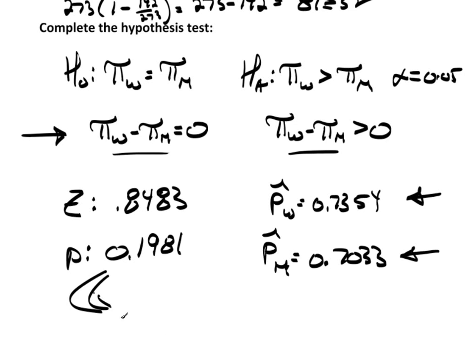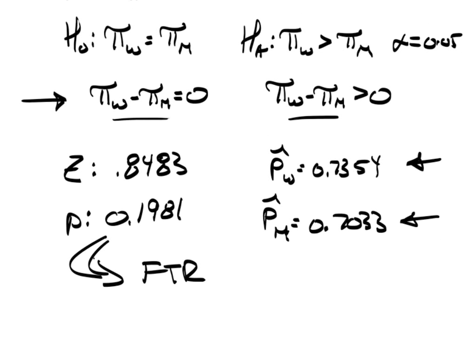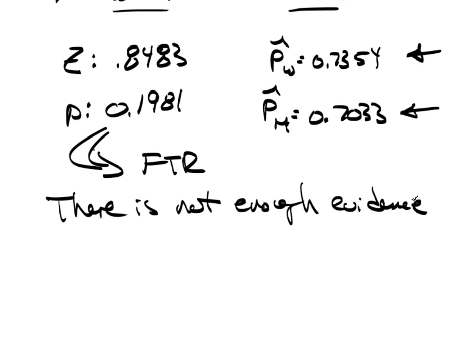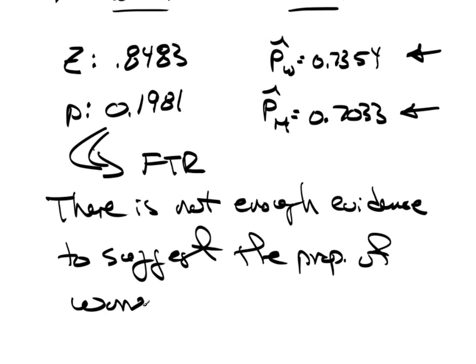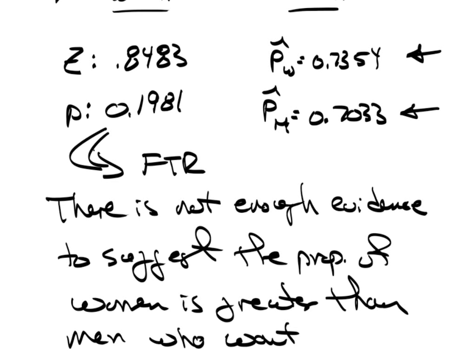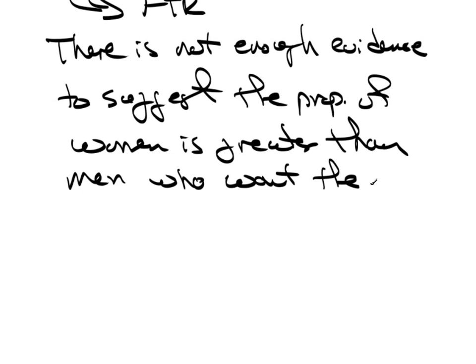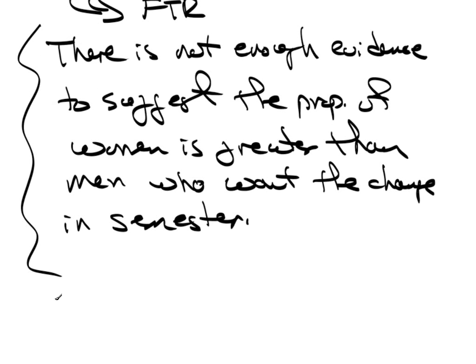And then, based on this p-value, you would fail to reject, and you would make the statement that there is not enough evidence to suggest the proportion of women is greater than men who want to change in semester. So there's the English conclusion.